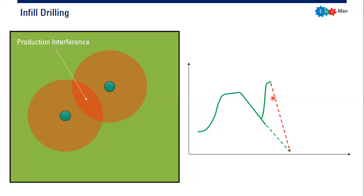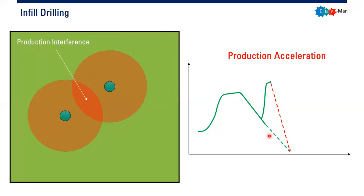You can get more reserve — calculated by the area under this zone — but we call it production acceleration instead, because the reserve addition is not significant. The production acceleration is quite clear: by drilling in this mode, we only sort of accelerate the production. At the end of the day, the production will last approximately the same amount of time as the previous case with only one well.